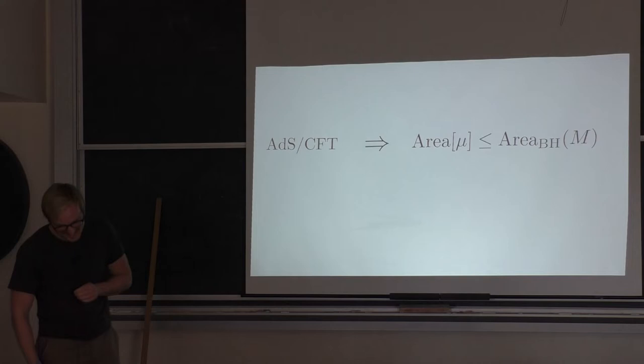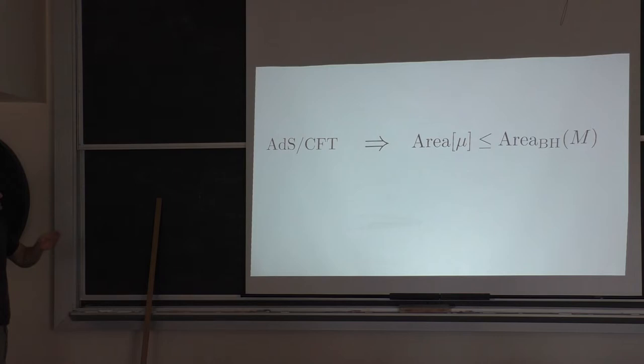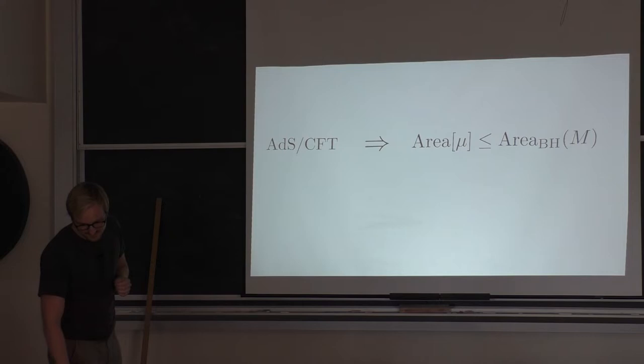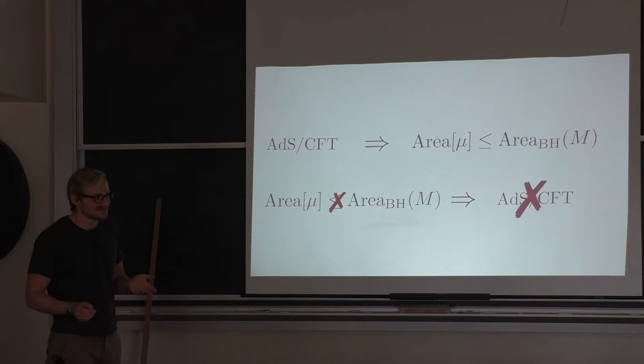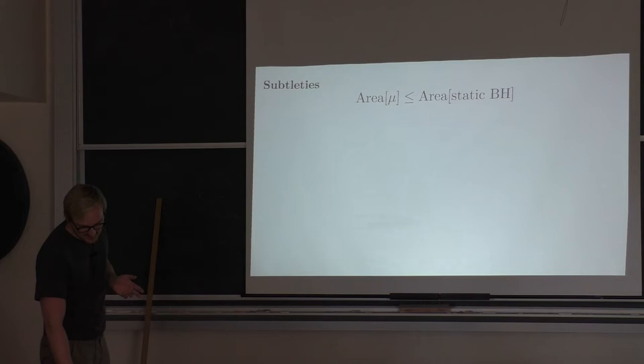This is essentially a derivation of the Penrose inequality: the area of mu is less than the area of the corresponding static black hole of the same mass. Taking the contrapositive, if this inequality is violated, then AdS/CFT — or at least this argument — breaks down.